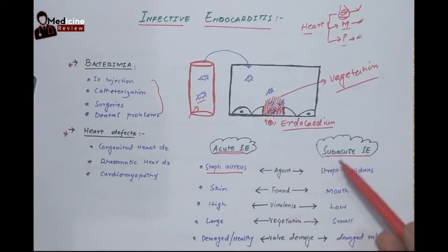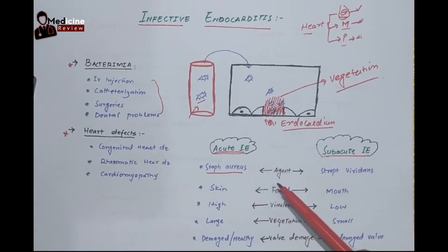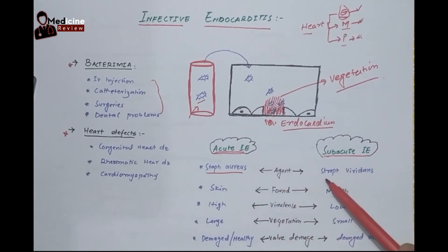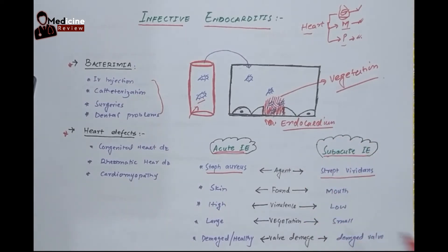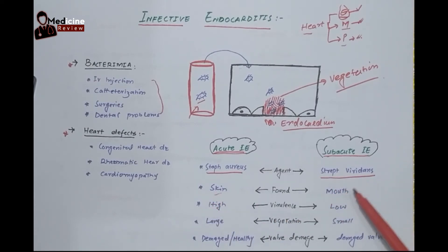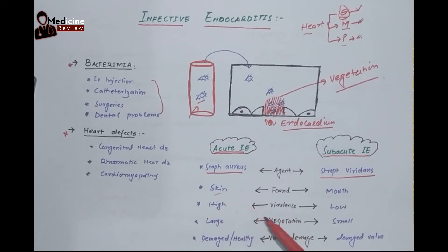Dividing these two based on severity: in acute infective endocarditis, Staphylococcus aureus is responsible; in subacute, Streptococcus viridans is responsible — and this is the most common organism causing infective endocarditis. Staph aureus is part of the normal flora of the skin, while Streptococcus viridans is normal flora of the mouth. Staph aureus has very high virulence, which is why it can damage even a normal heart.